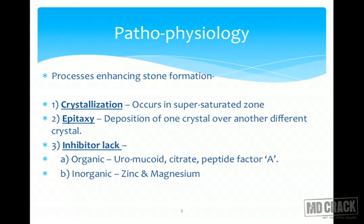Various processes enhance stone formation. There is crystallization, which occurs especially in the zone of supersaturation. Then there is epitaxy - the deposition of one type of crystal over another type. Lastly, there is inhibitor lag, which can be organic or inorganic. Organic causes include absence of uromucoid, citrate, and peptide factor A, leading to supersaturation and stone formation. Inorganic inhibitor lag, such as deficiency of zinc and magnesium, will also precipitate stone formation.